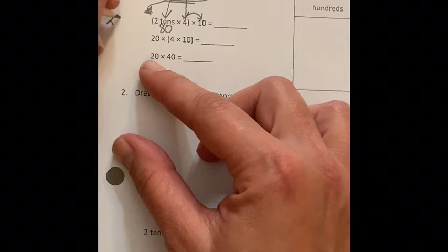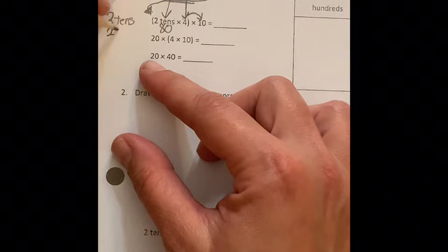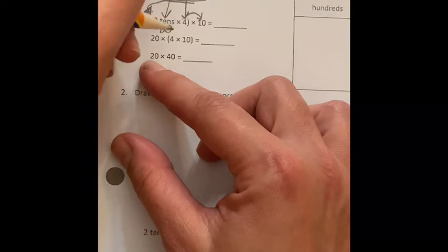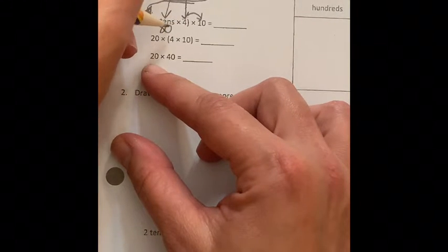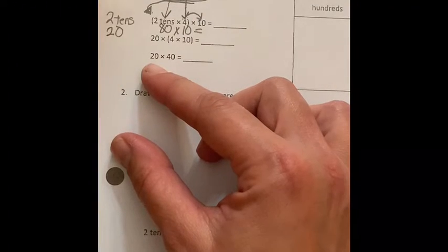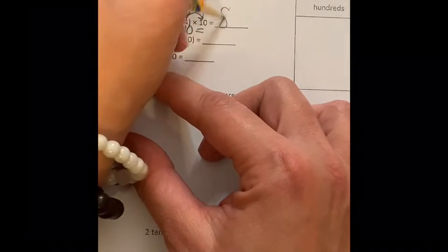Two tens is actually 20. And then I'm going to think, well let's see, 80 times ten. Well, 80 times ten, that is going to be 800.